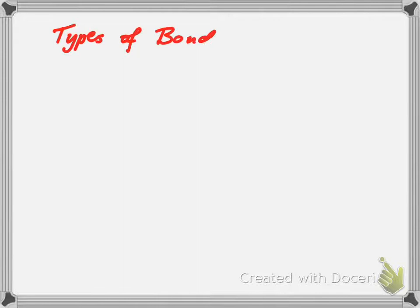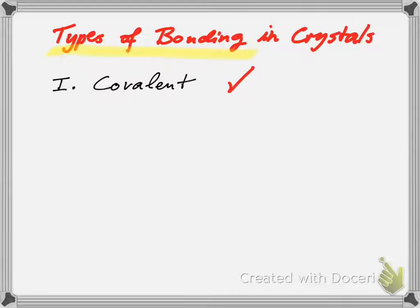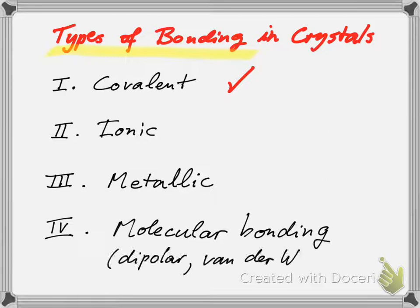Today we'd like to look at the types of bonding that occur in crystalline matter. The first one we've already covered is covalent bonding. The second we want to discuss today is ionic bonds. Then there's also metallic, and finally there is molecular bonding which relies on dipolar forces, dipole interactions, van der Waals, and hydrogen bonds.